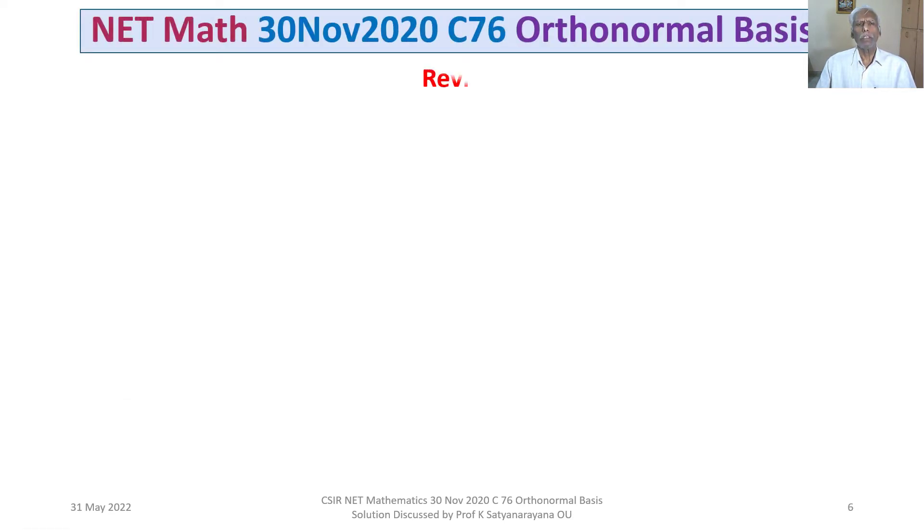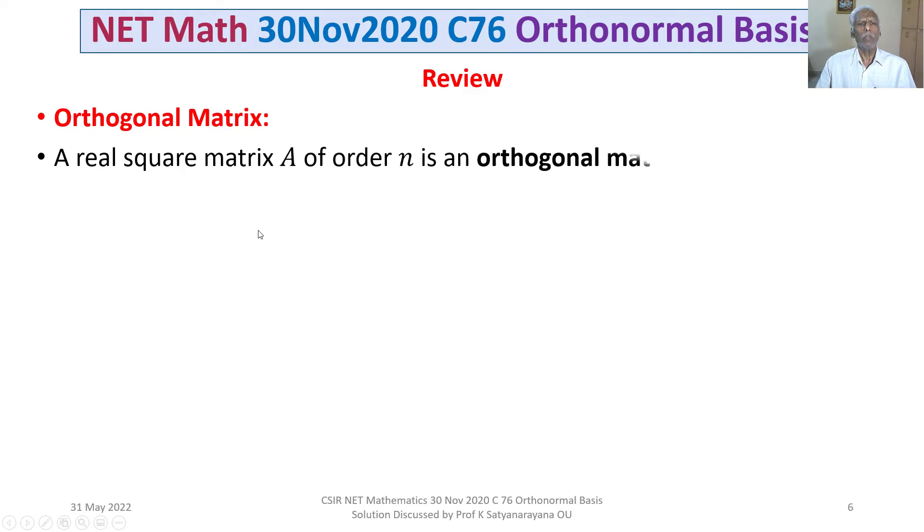Let us first see some equivalent definitions of an orthogonal matrix. A real square matrix A of order n is an orthogonal matrix if and only if AᵀA equals AAᵀ.